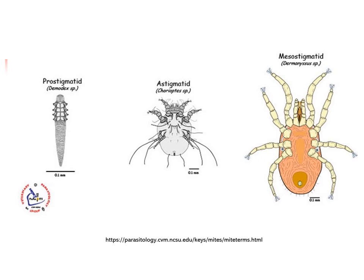This diagram shows a comparative anatomy of the prostigmatized mites, astigmatized mites, and the mesostigmatized mites. For the prostigmatized mites, the representative species is the demodex species. In terms of its body shape, it is very elongate. The legs are very stumpy, and it can be collected with hair plucking.